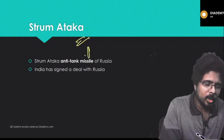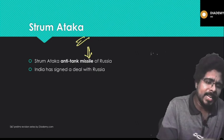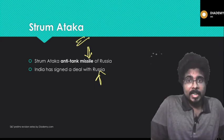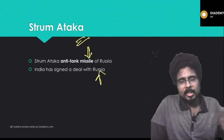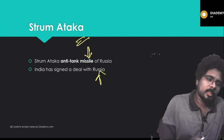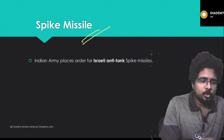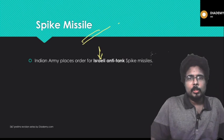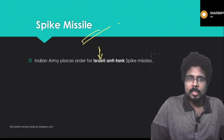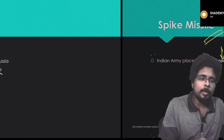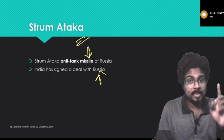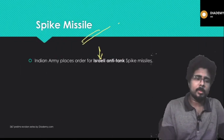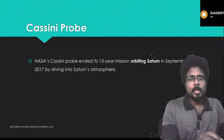Next, Stum Attack is the anti-tank missile of Russia, and India has signed a deal with Russia for it. The Spike missile is also an anti-tank missile but of Israeli origin. India made two deals: the Spike missile from Israel and the Stum Attack from Russia. Remember — Stum Attack is the Russian anti-tank missile and Spike is the Israeli anti-tank missile.